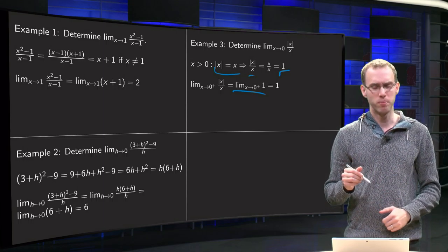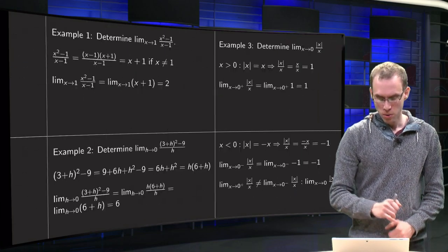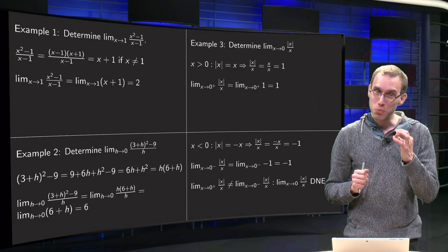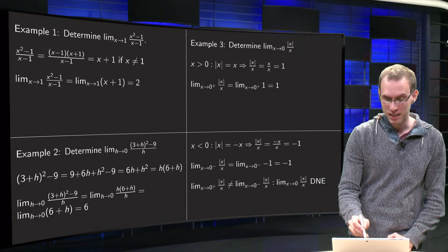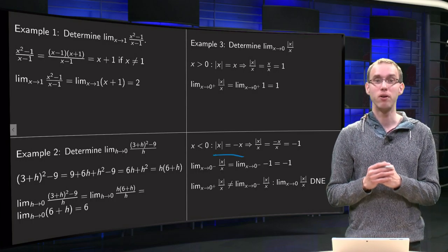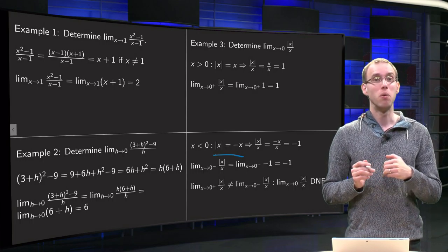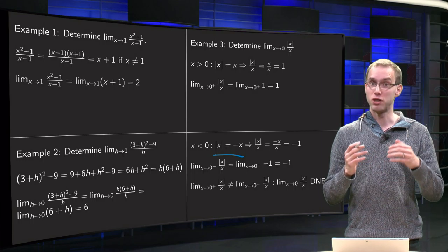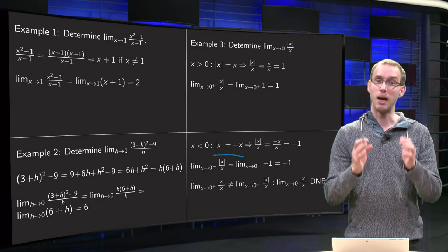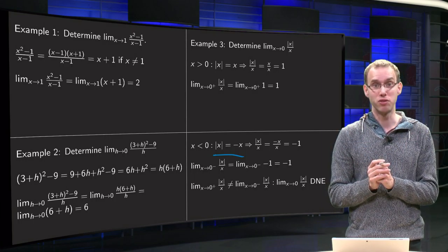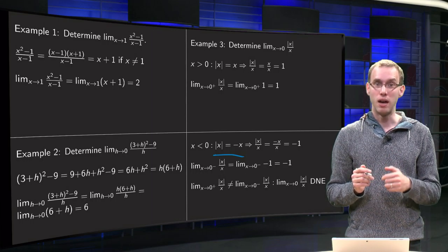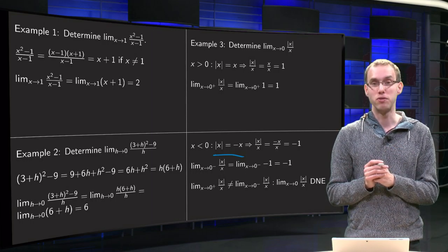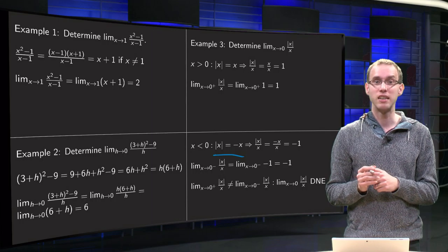So, what is the problem in the example? Well, if x is smaller than 0, if x is negative, then the absolute value of x equals minus x. Why is this? If x is, for example, minus 3, then the absolute value of minus 3 equals 3. So, if you want to get rid of the absolute value, then you have to add an initial minus sign. The absolute value of x equals then minus minus 3 equals plus 3 again.